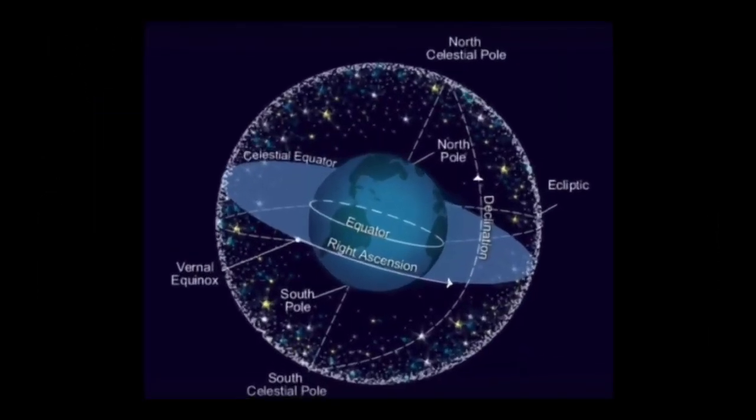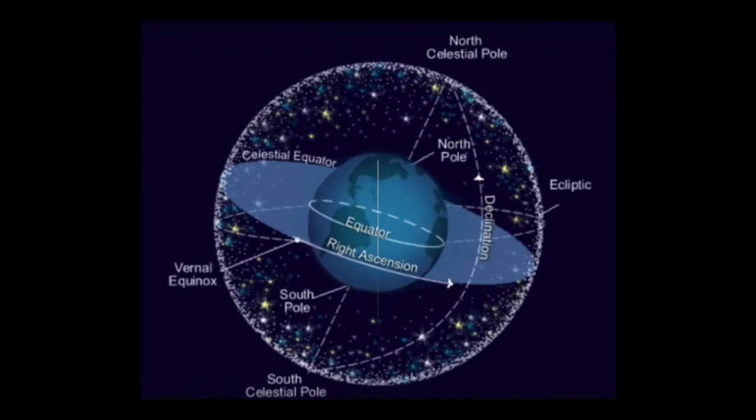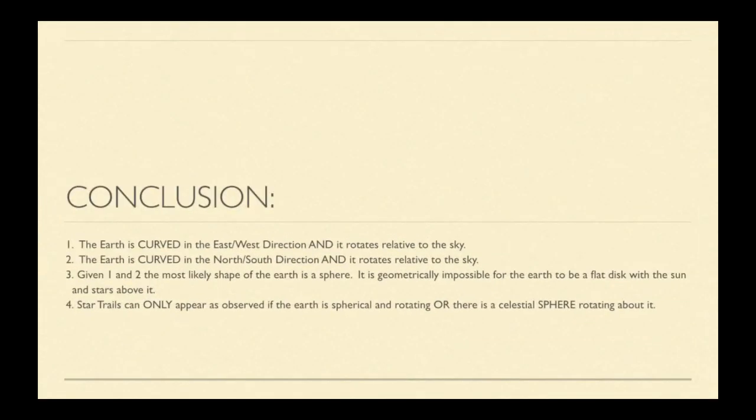Now, while a rotating spherical Earth elegantly solves this problem, let's go ahead and play devil's advocate and look at the possibility of a stationary spherical Earth and a stationary flat Earth. The only way that we could reproduce the movements of the Sun and the celestial poles along with the celestial equator would be to have a celestial sphere orbiting or rotating about the Earth as illustrated here.